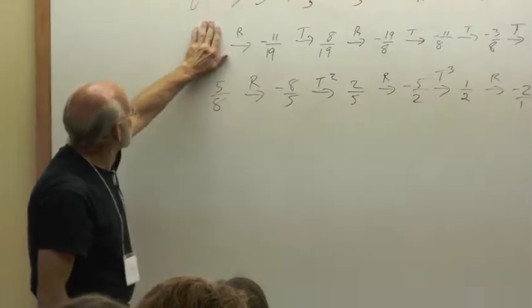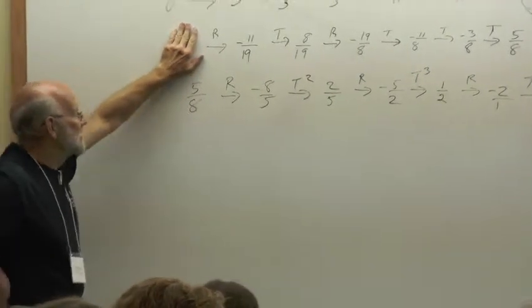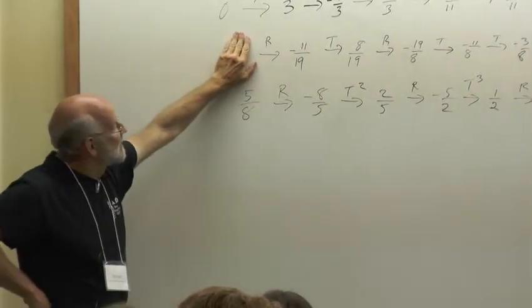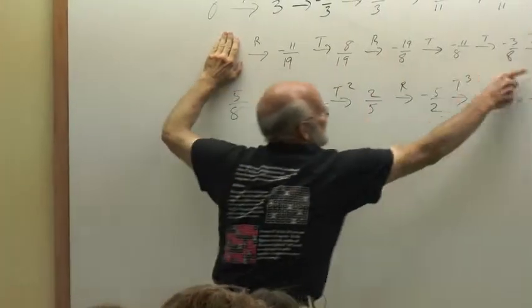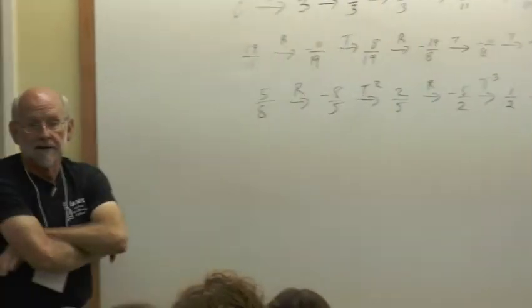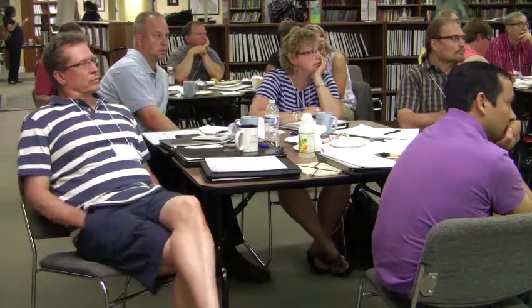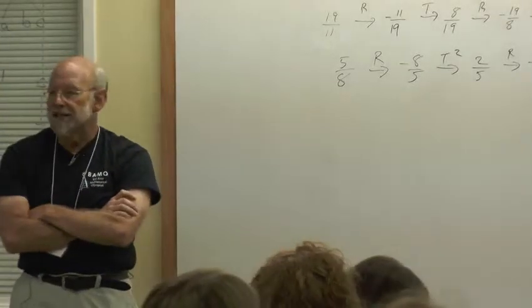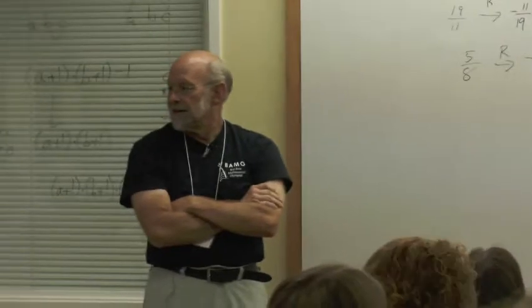Tell me if you see any nice patterns among the numbers we've got here. The denominators are getting smaller and smaller. Is that a good thing? Because why?